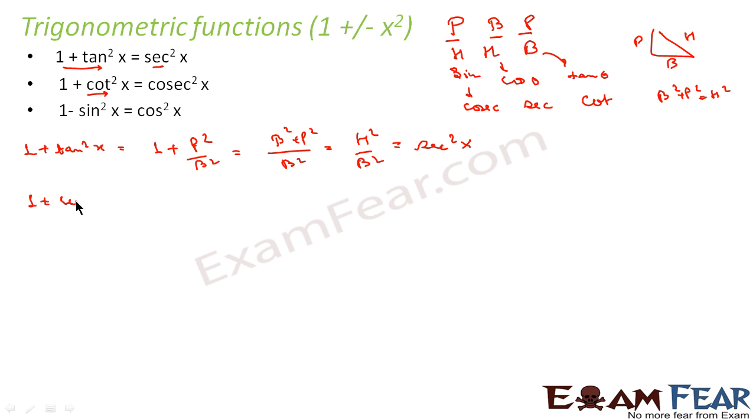Similarly, for 1 plus cot²x: cot is the reverse of tan, so cot equals B by P. Writing 1 plus (B/P)² and taking P² common, we get (P² + B²)/P². Since P² + B² equals H², this becomes H²/P². Now H by P is cosec because P by H is sin. So this becomes cosec²x.